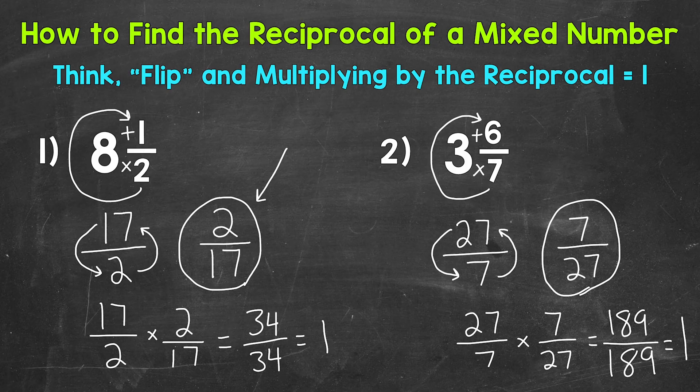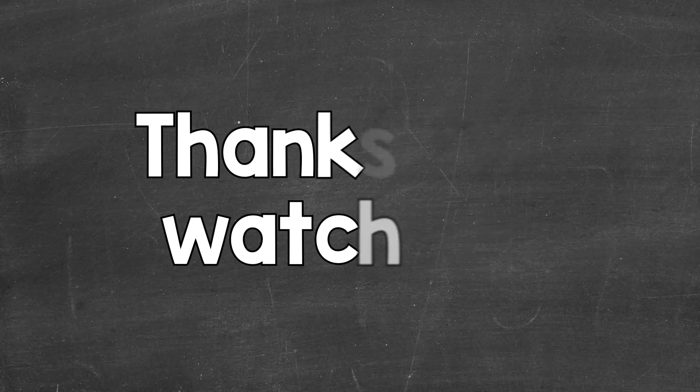So the reciprocal of 3 and 6 sevenths is 7 twentysevenths. There's how you find the reciprocal of a mixed number: convert the mixed number to an improper fraction, and then flip that improper fraction to get the reciprocal. I hope that helped. Thanks so much for watching.